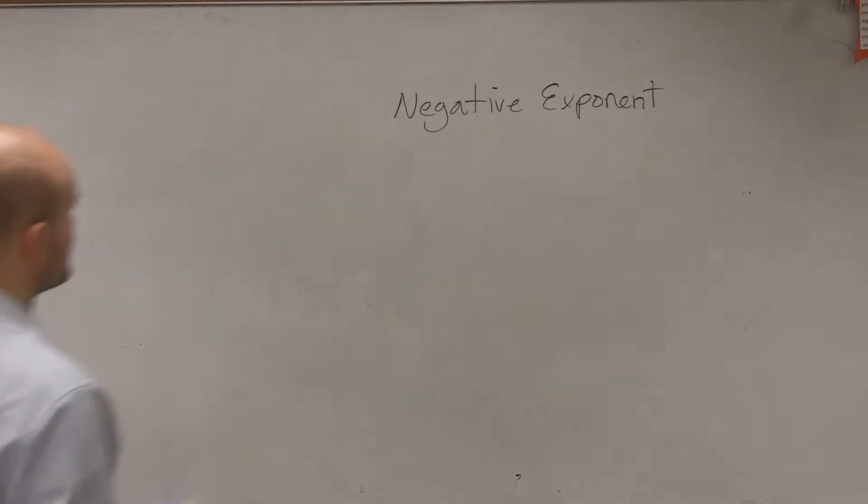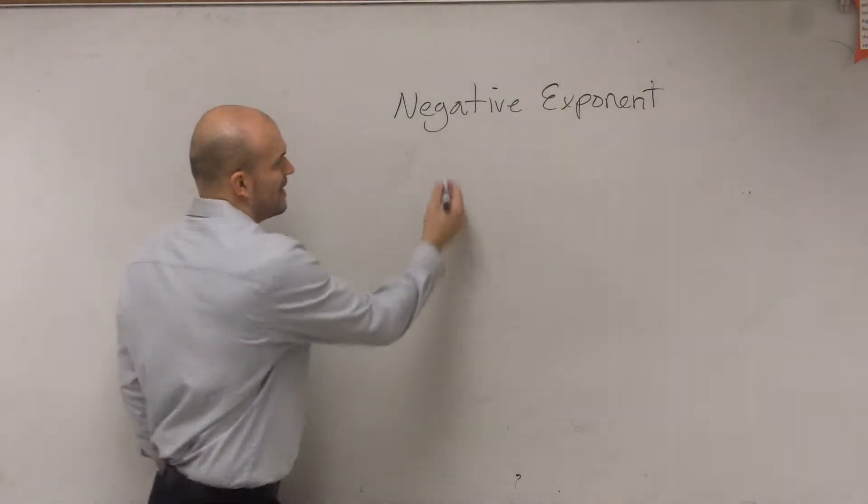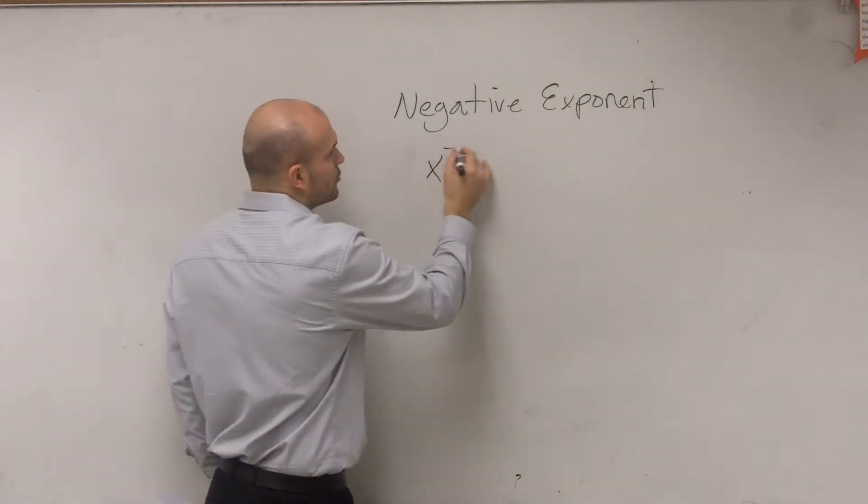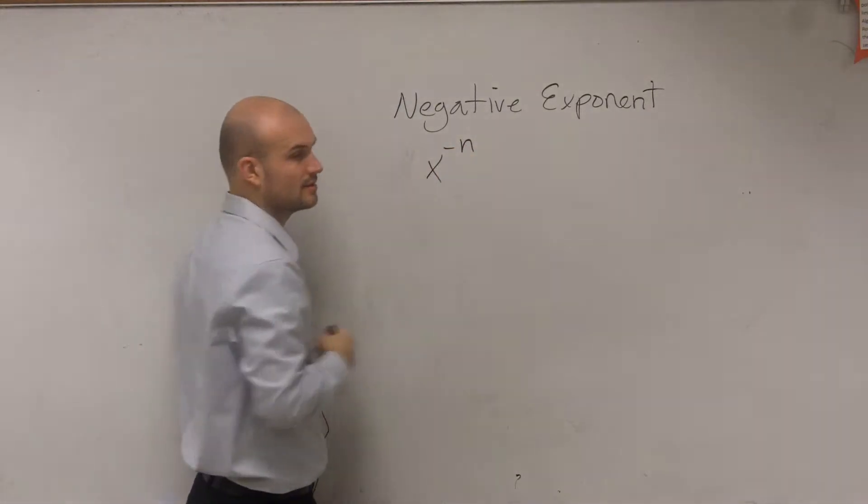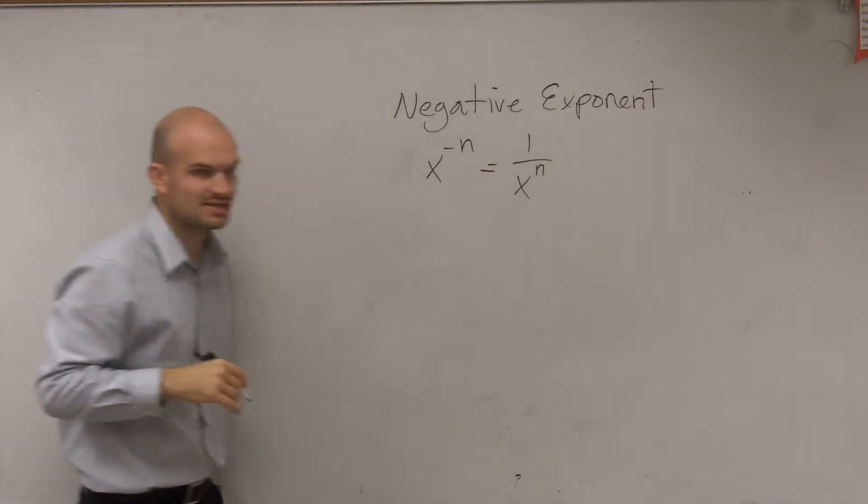So negative exponents. What the negative exponent states is that when you have a base raised to a negative exponent, that is simply going to be equal to 1 over that base raised to the positive exponent.